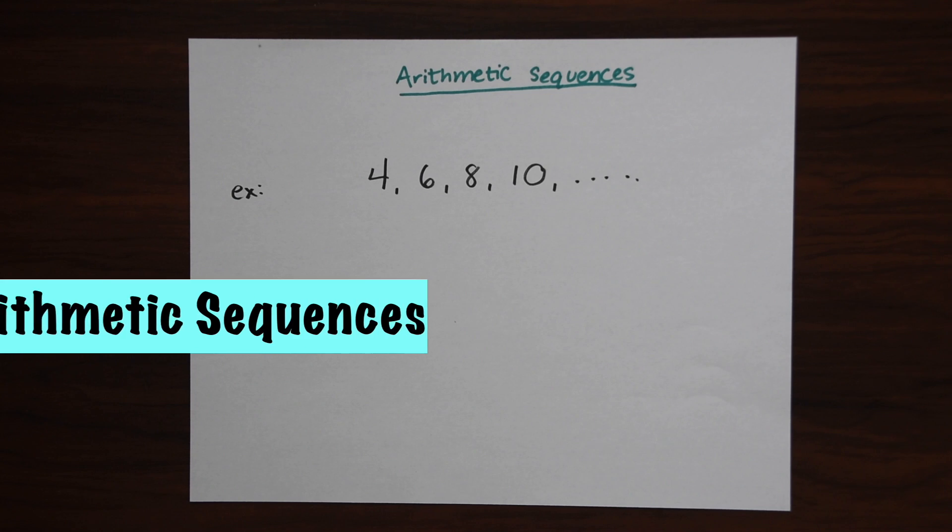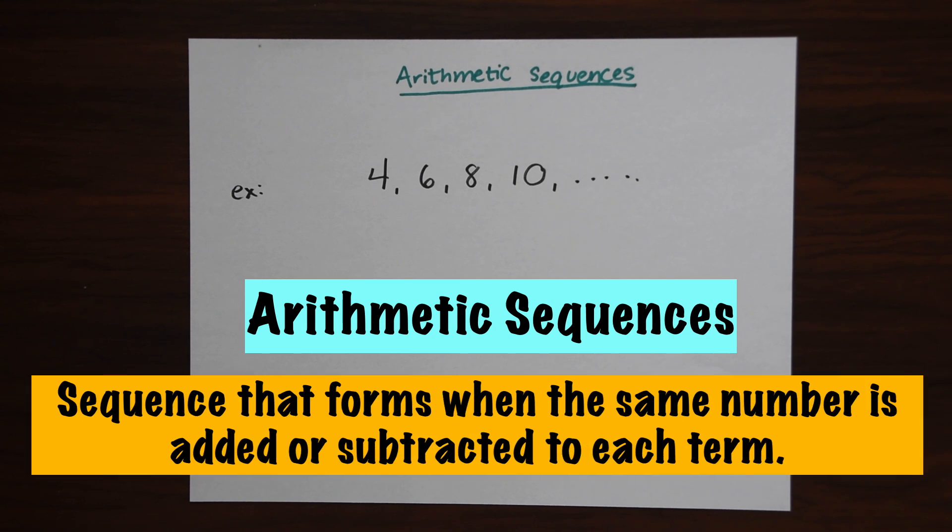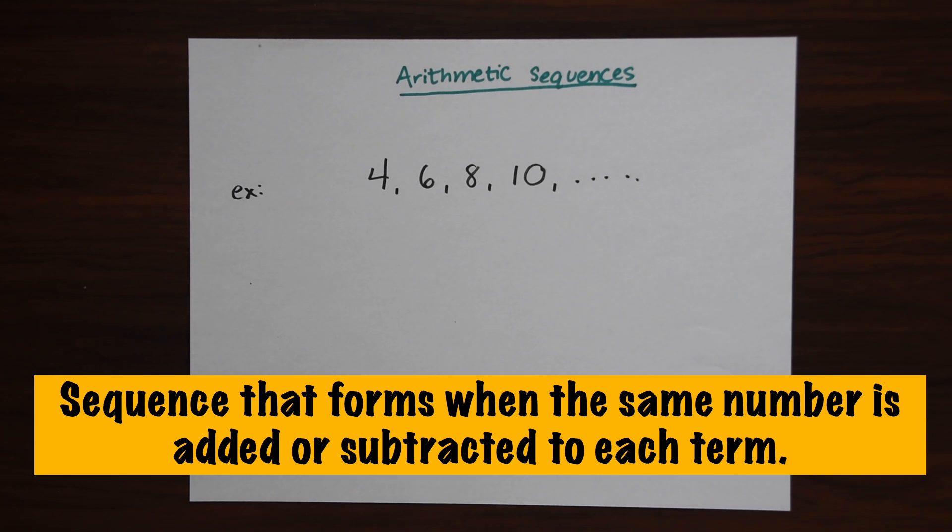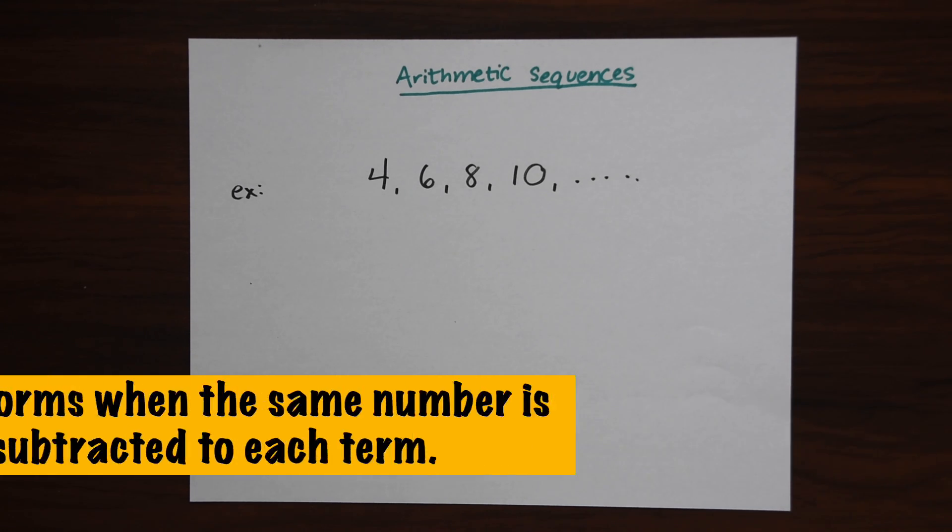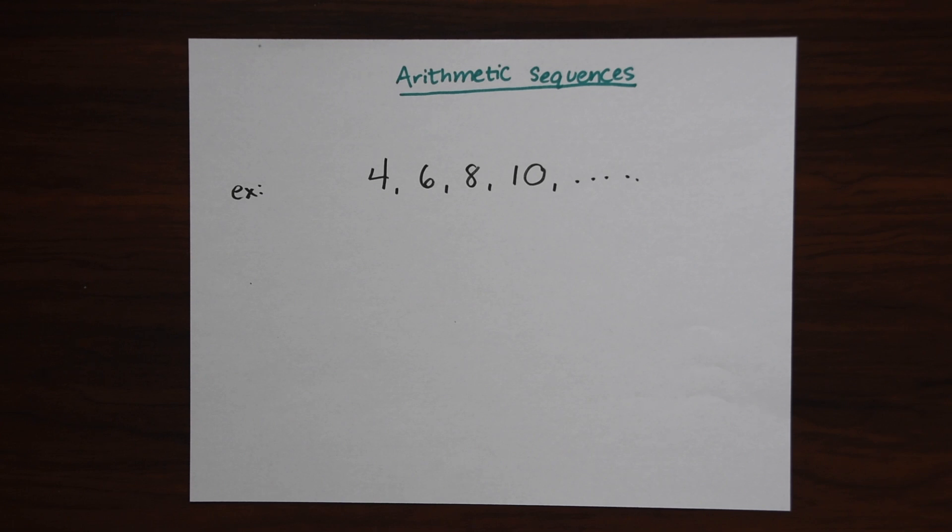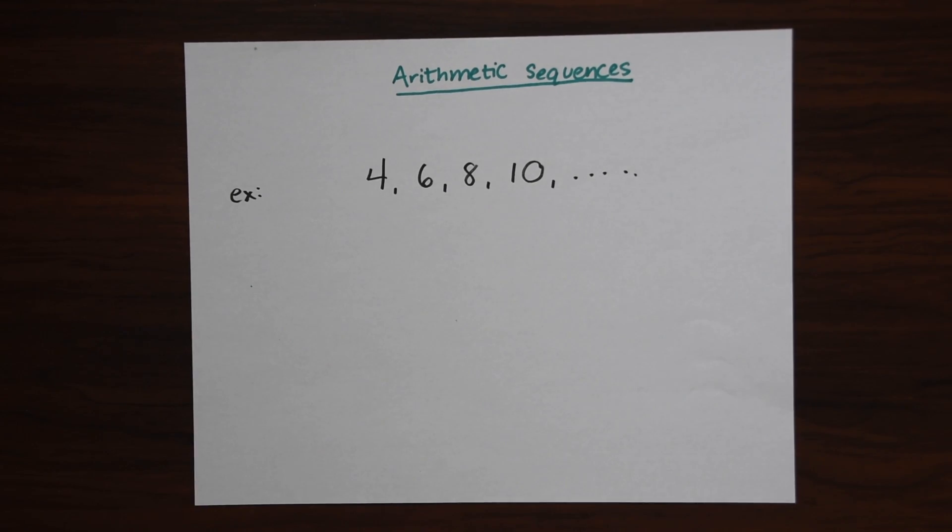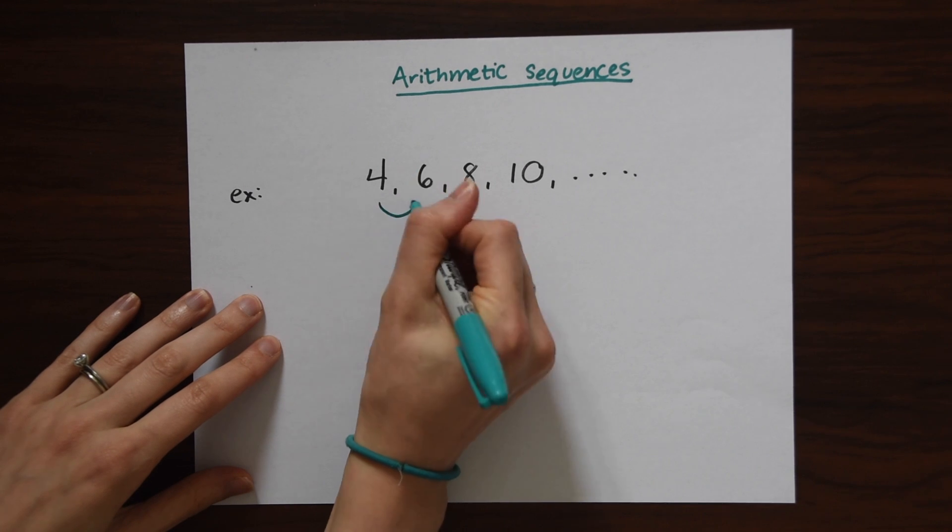Arithmetic sequences are a sequence that forms when the same number is added or subtracted to each term. If we look at this example here, we have this sequence of numbers: 4, 6, 8, 10. If you notice the pattern that forms with these numbers, we're just adding 2 to each number.